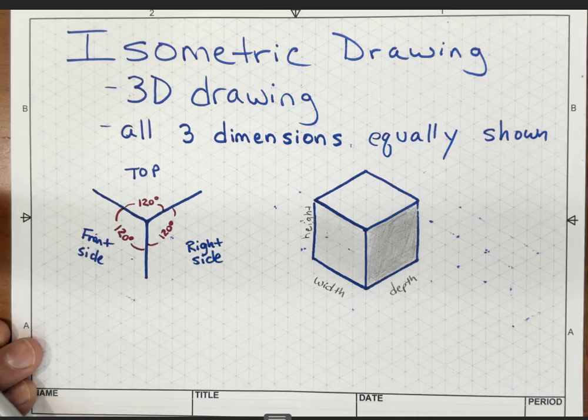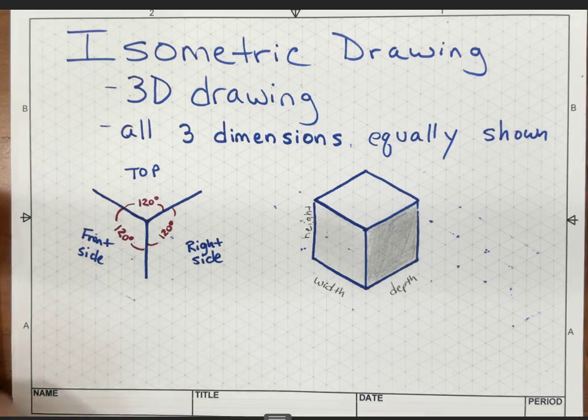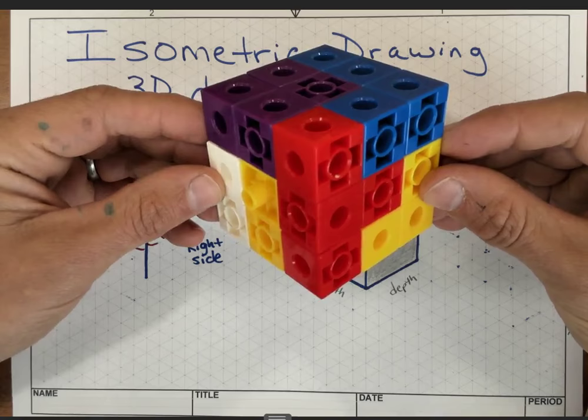It's a drawing type so that you can see all three of those dimensions equally. What do I mean by that? Well, let's look at this cube right here. Notice that I'm holding it in an orientation where you can see three different faces.